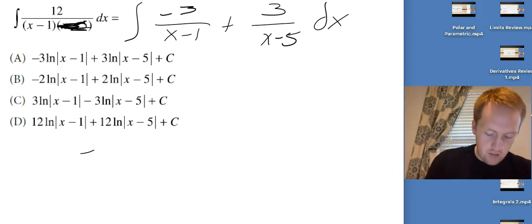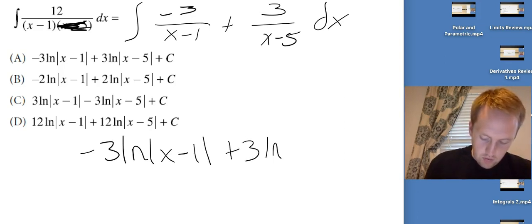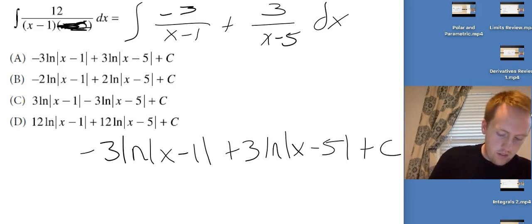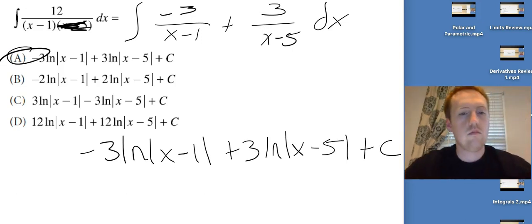Okay, the antiderivative of that is going to be -3*ln|x-1| plus 3*ln|x-5| plus C. And that's this guy right here. Or girl. Our answer is gendered. Thoughts to ponder.